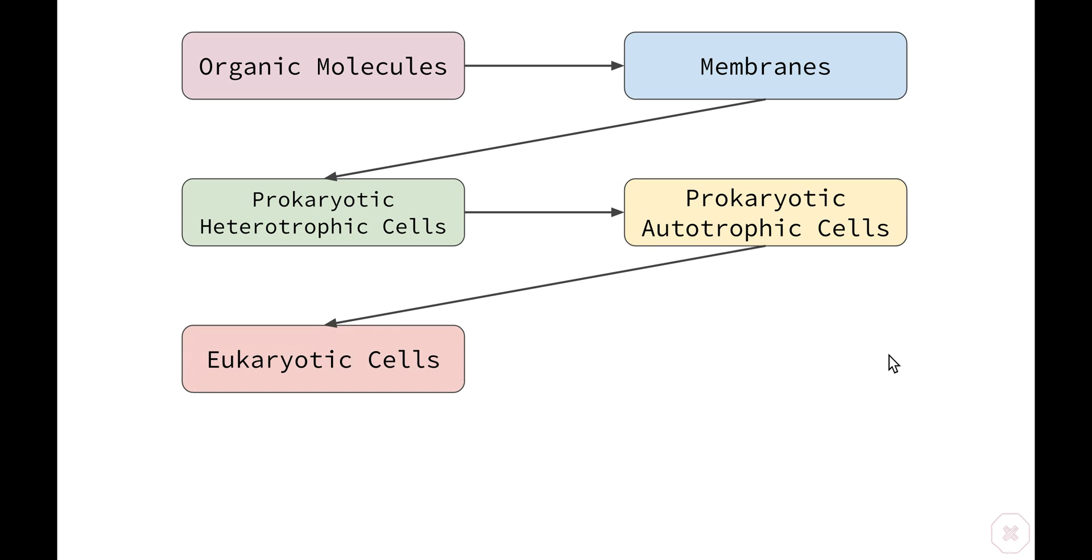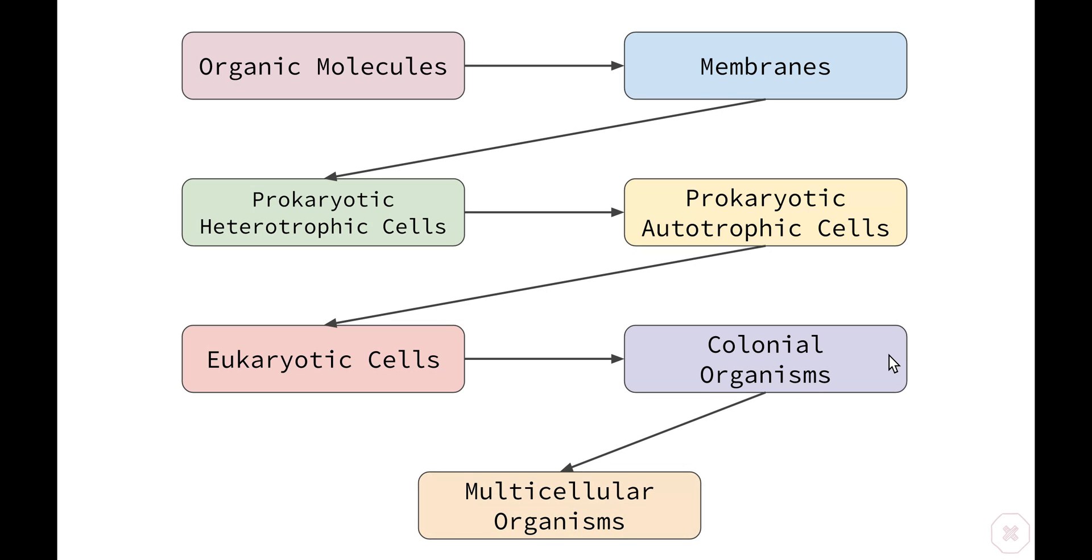Then we had the formation of our eukaryotic cells, which are those with membrane-bound organelles. Once these cells had these organelles inside them that were able to carry out particular jobs, we then had colonial organisms formed where a number of the same type of cells got together and created a colony. And then lastly, we had those colonies turn into multicellular organisms where each of the different cells carried out a different function.